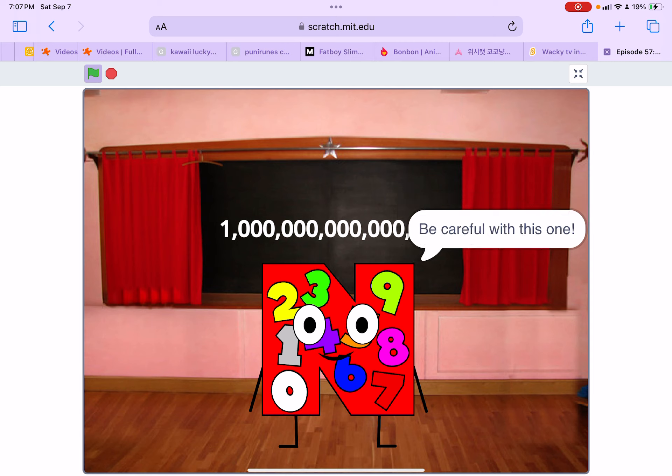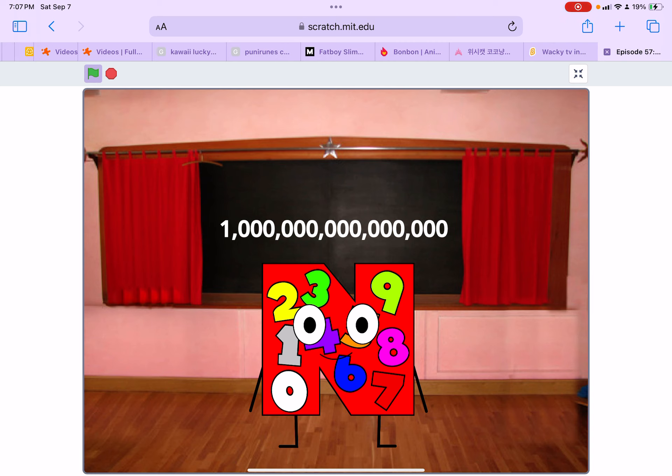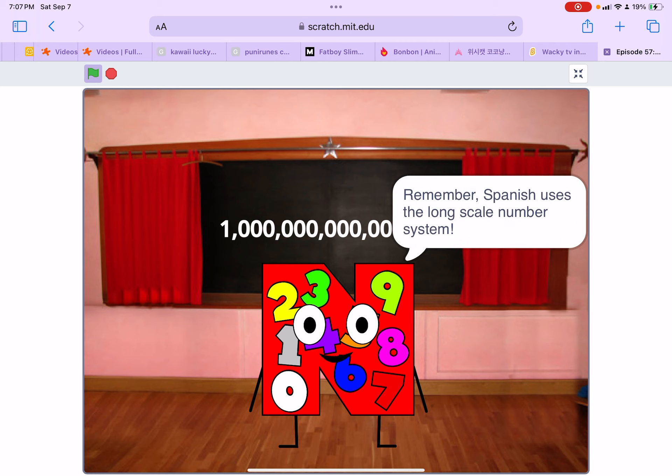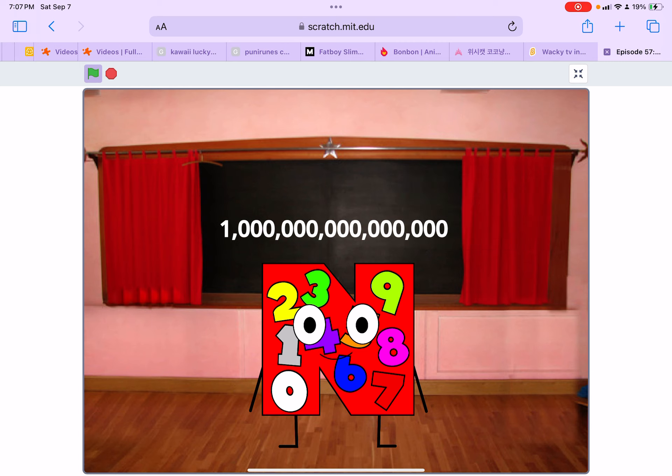Question two: what is one quadrillion in Spanish? Be careful with this one. One quadrillion. Incorrect. Be careful, remember Spanish uses the long scale number system. Oh I know, yes, mil billones. Mil billones is correct.